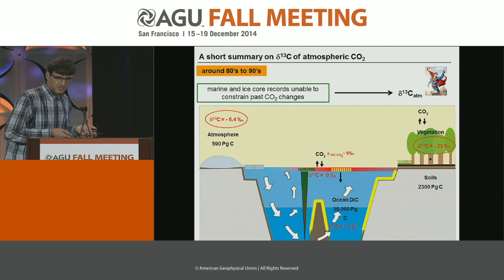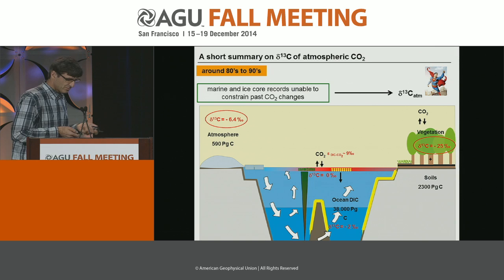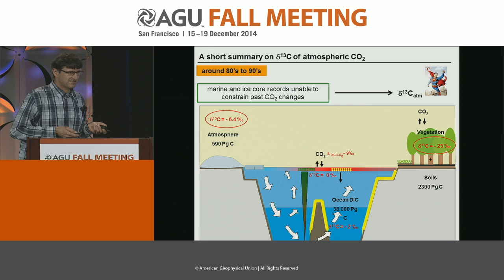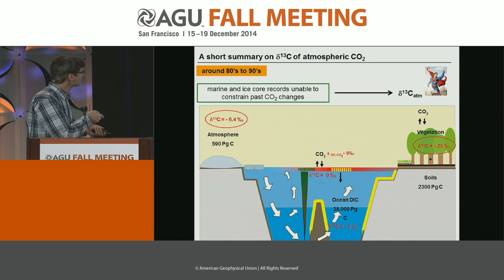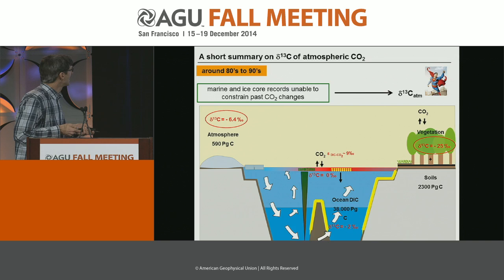I'll jump in the remaining minutes to the carbon isotope story, which runs in parallel. During the 1980s and 90s, people thought the carbon cycle was way too complex and that they needed more constraints. One constraint was the carbon isotopic composition of atmospheric CO2. Carbon isotopes are a nice tool to differentiate among processes and reservoirs, and a few years later the first pioneering studies popped up.